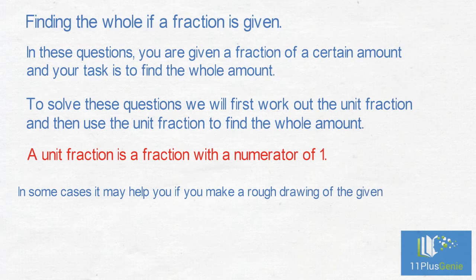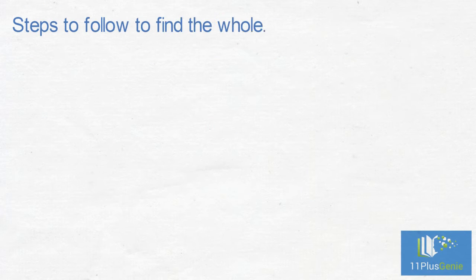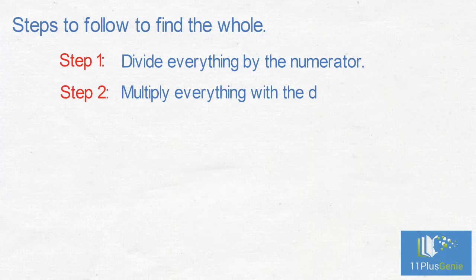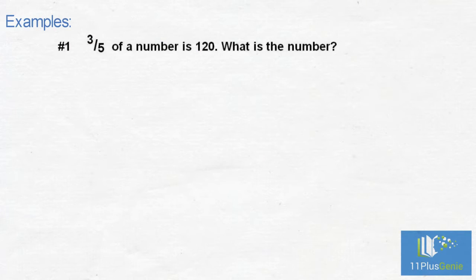Steps to follow to find the whole: Step 1, divide everything by the numerator. Step 2, multiply everything with the denominator. Examples: Number one, three-fifths of a number is 120, what is the number?